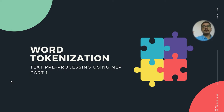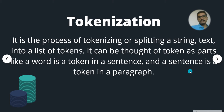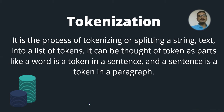This will be a part-one video on word tokenization, and there will be a second part following this, based on different methods for word tokenization. So word tokenization is nothing but the process of splitting a string or text into a list of tokens — as you can see from this image, these are like a stack of coins, and each coin can be considered as a token.